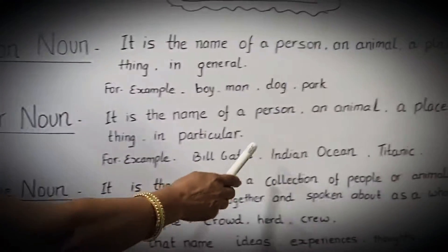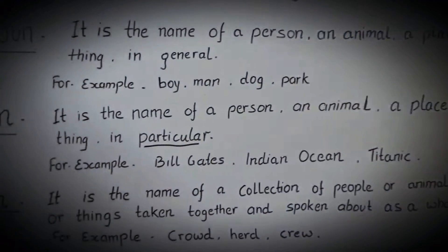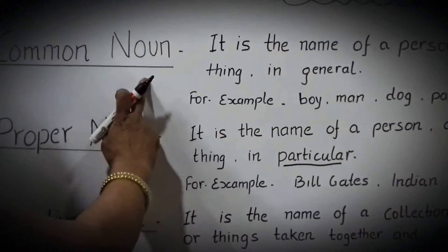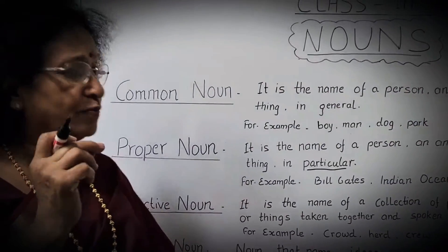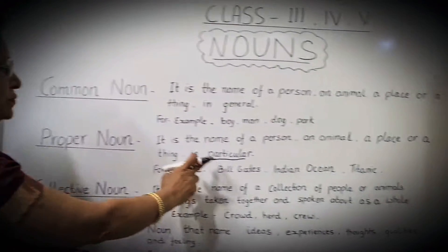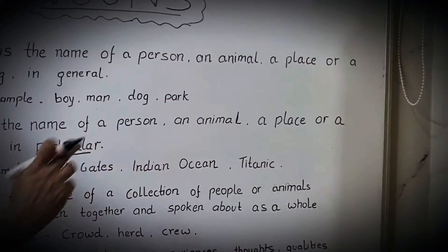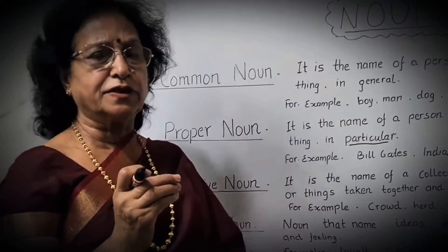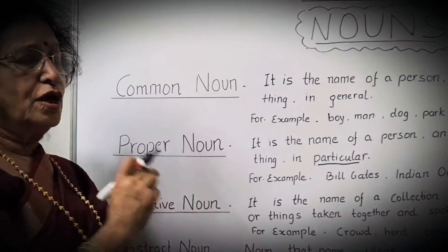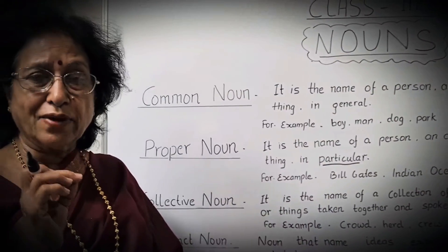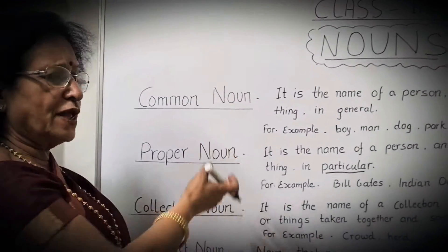Second is proper noun. It is the name of a person, animal, place, or a thing in particular. For example, in common noun you said 'a boy' — boy is a common noun. But if you say Mohan, then Mohan becomes a particular boy, so Mohan becomes a proper noun. Examples are Bill Gates, Indian Ocean, Titanic, Gandhiji — any particular name. Most importantly, whenever you write a proper noun, you start it with a capital letter.